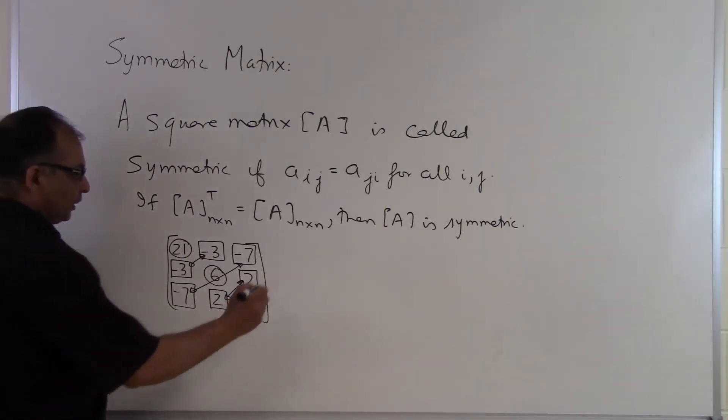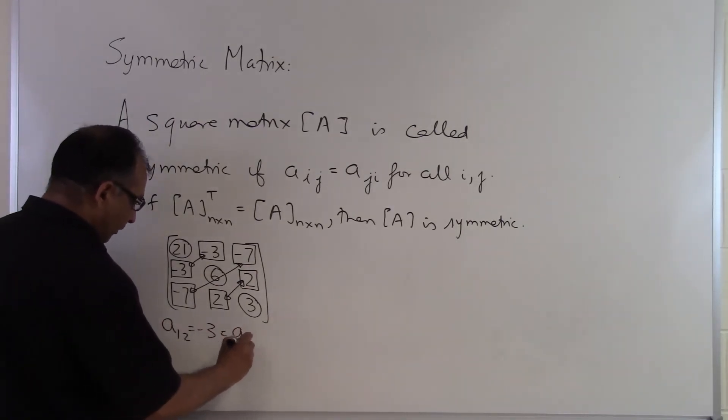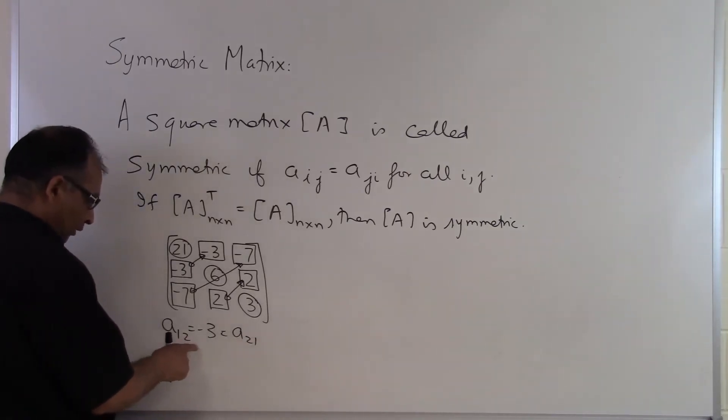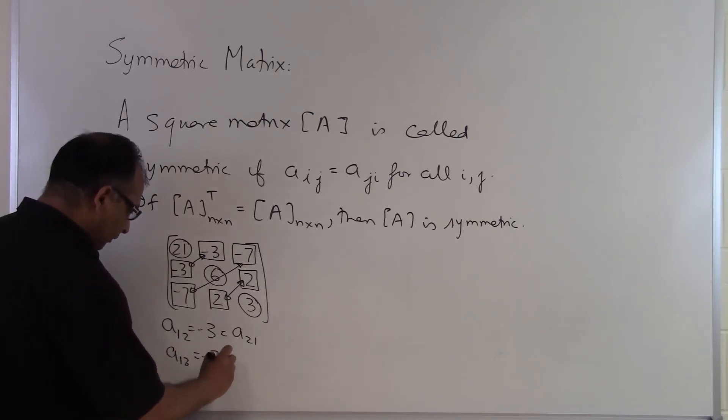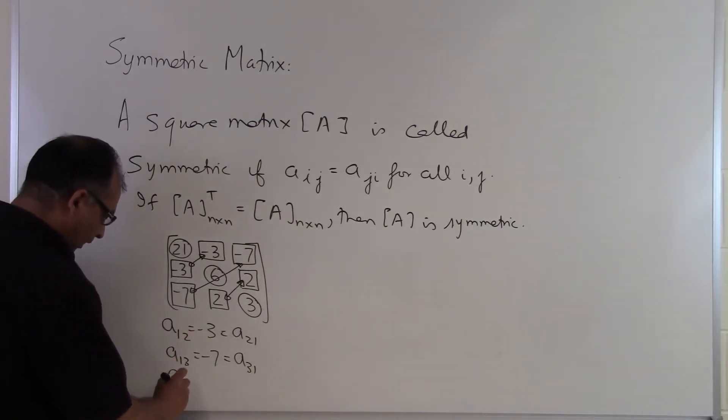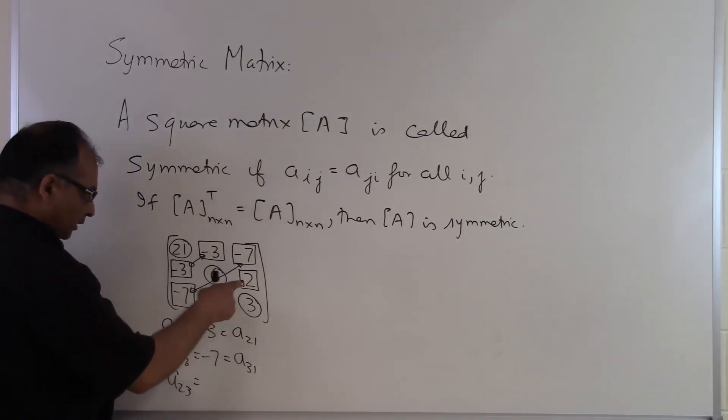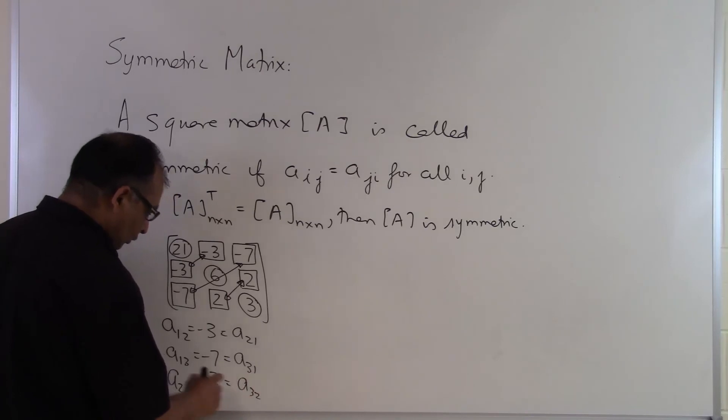So if I had to write it down, I will say that for A12 which is minus 3, is same as A21, so the first row second column is minus 3 is same as the second row first column. A13 is minus 7, first row third column is same as A31 third row first column. And then I have A23 is 2 and third row second column is 2 also, so they are equal.